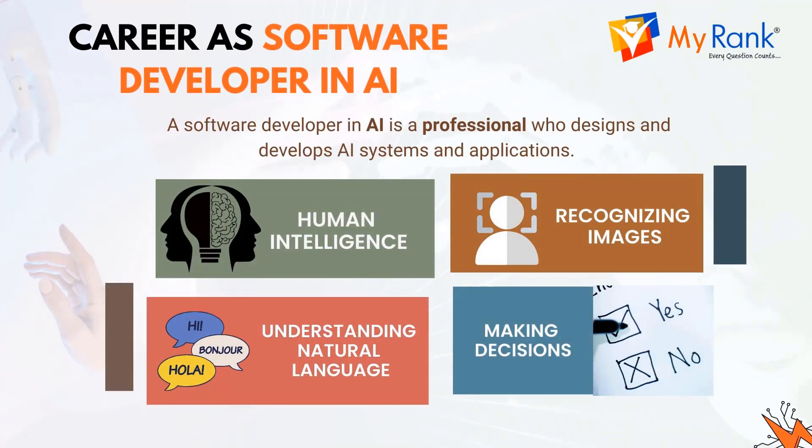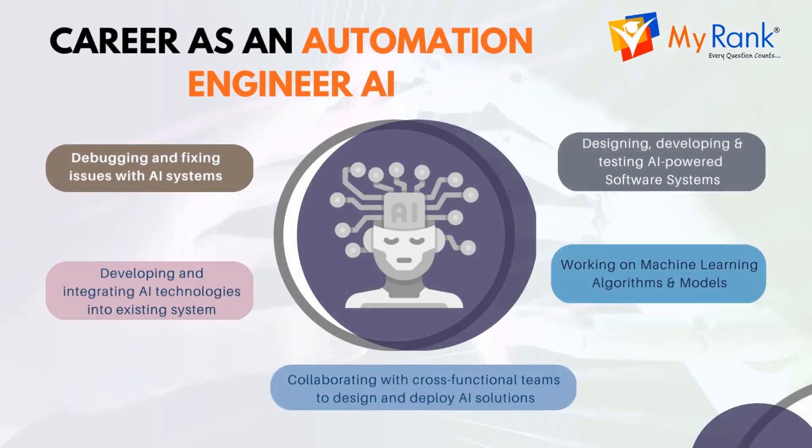A software developer in AI is a professional who designs and develops AI systems and applications. They use programming languages and algorithms to create software that can perform tasks that typically require human intelligence, such as recognizing images, understanding natural language, and making decisions. A career as an automation engineer in AI involves designing and implementing automation solutions using AI technologies. Key responsibilities include designing, developing, and testing AI-powered software systems, working on machine learning algorithms and models, developing and integrating AI technologies into existing systems, debugging and fixing issues with AI systems, collaborating with cross-functional teams to design and deploy AI solutions, and monitoring and analyzing system performance.